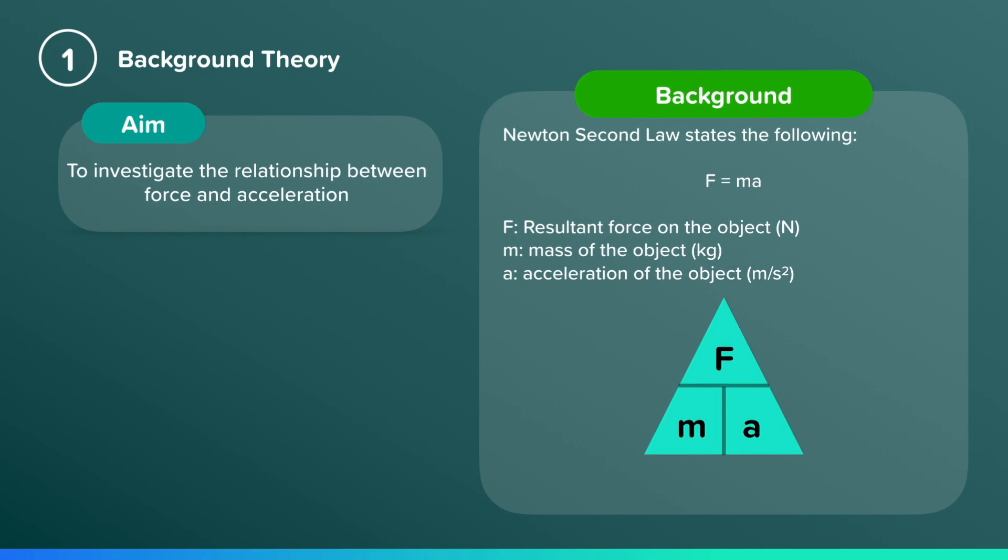Newton's second law states the following: The force on an object is equal to the mass of the object multiplied by the acceleration of the object. The force refers to resultant force, which is the total force that acts on an object.